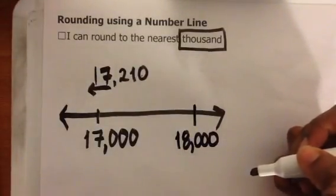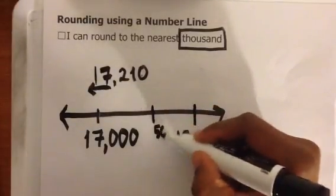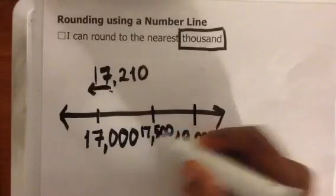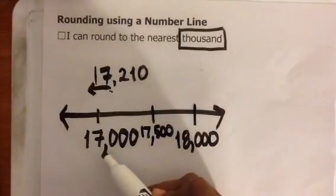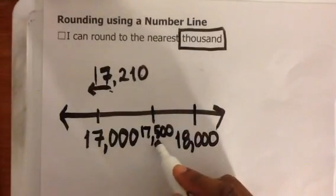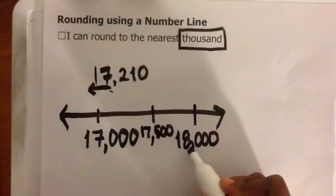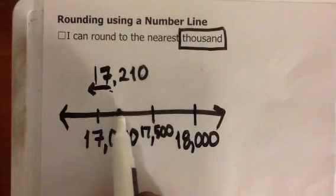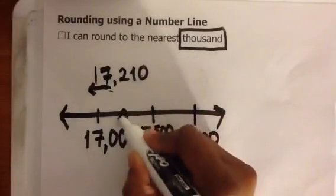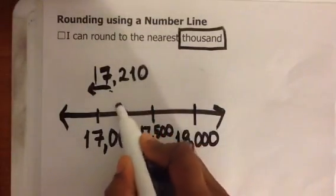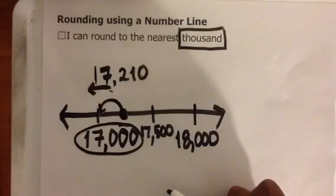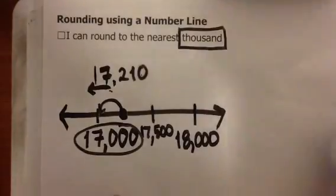Remember that halfway between 0 and 1,000 is 500, and everything to the left gets left. So I have 17,000, 17,500, and then 18,000. I simply need to plot 17,210 on this number line — about right here. And I can see that 17,210 is closer to the benchmark 17,000. Therefore, 17,210 to the nearest thousand is 17,000.